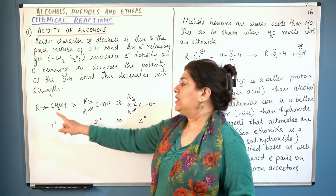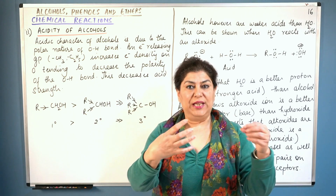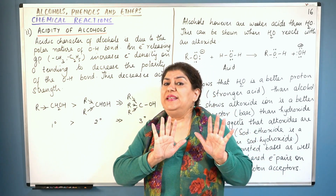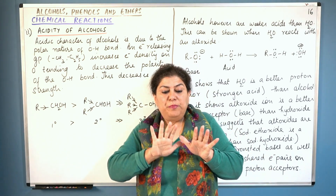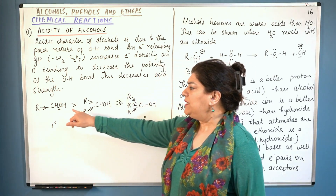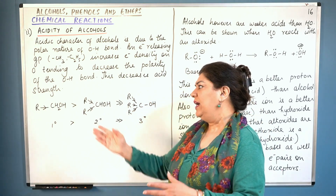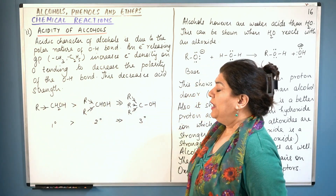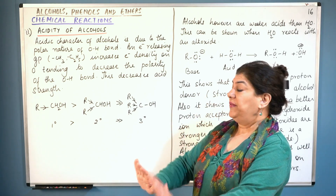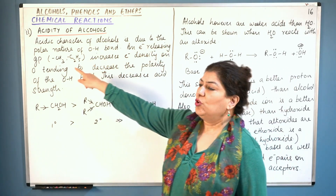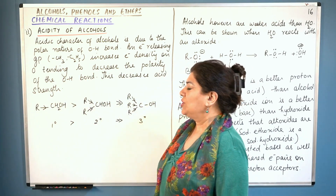All alkyl groups are electron-releasing groups — they give out electrons, they are electron-rich. Electron-releasing means they push electrons away from themselves, because carbon is not a very electronegative element, and when it has hydrogens which are also pushing electrons away, carbon also starts pushing electrons away. So methyl, ethyl, propyl — any alkyl group is electron-releasing. When an electron-releasing group like methyl or ethyl is attached to the carbon to which the OH is attached, what happens?